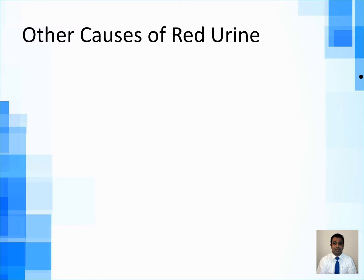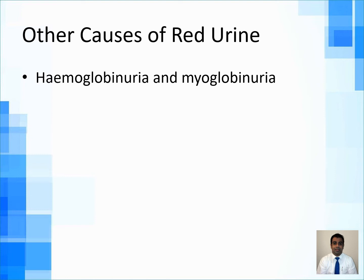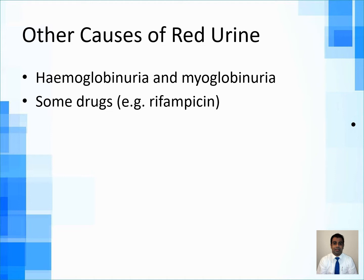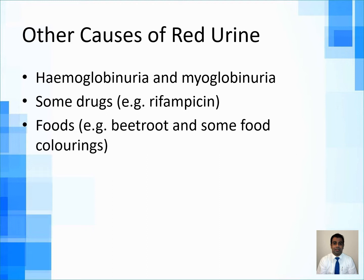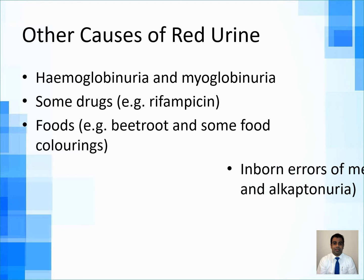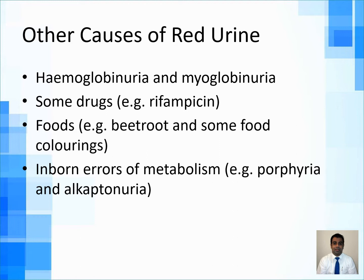What are the other causes of red-colored urine? There is hemoglobinuria following intravascular hemolysis, where urine would again appear red or dark red — this is not true hematuria. When there is significant rhabdomyolysis, myoglobinuria can also lead to red urine. Certain drugs like rifampicin are notorious for causing a color change in the urine. Foods like beetroot and some food coloring can make urine red, and inborn errors of metabolism like porphyria and alkaptonuria can also lead to red-colored urine.